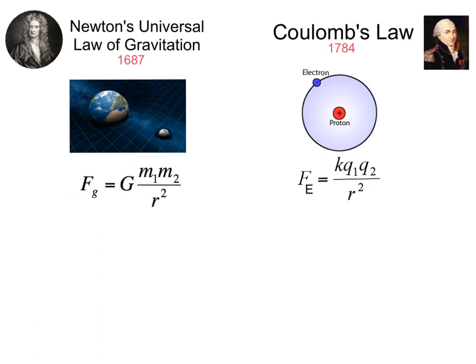Newton said that the force of gravity depends directly on the two masses, such as the mass of the Earth and the mass of the Moon, but then inversely proportional to the distance between them squared. That proportionality becomes an equation when we use the gravitational constant.